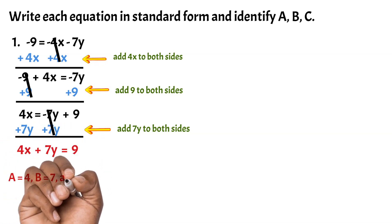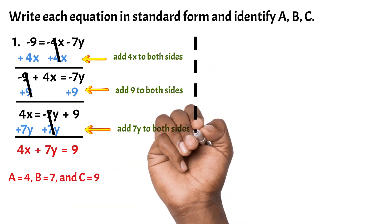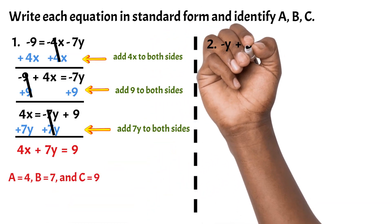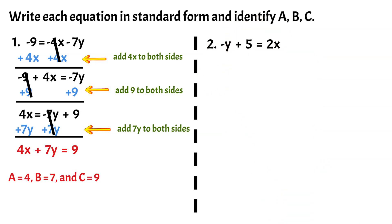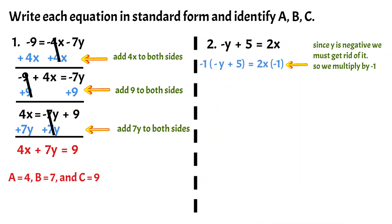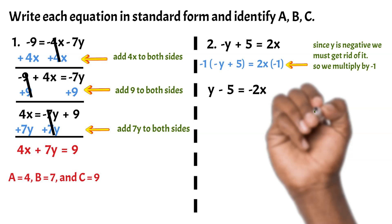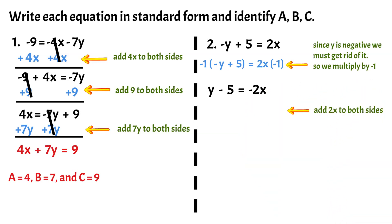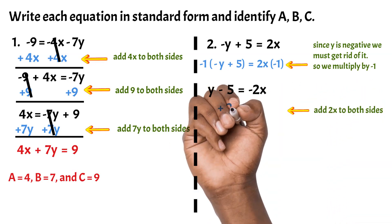We now have the equation in standard form, therefore A equals 4, B equals 7, and C equals 9. Let's move on to Example 2: -y + 5 = 2x. Since we have negative y and A can't be negative, we can multiply both sides by -1 to get rid of the negative y. We now get y - 5 = -2x.